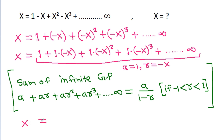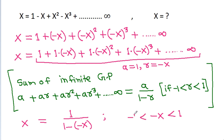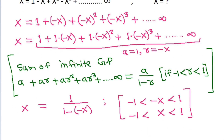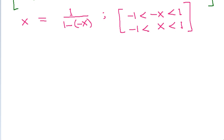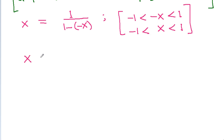So x will be equal to 1 divided by (1 minus (-x)), and the condition is that minus x must be less than 1 and greater than minus 1, which means x will be between minus 1 and 1. Therefore x equals 1 divided by (1 plus x).